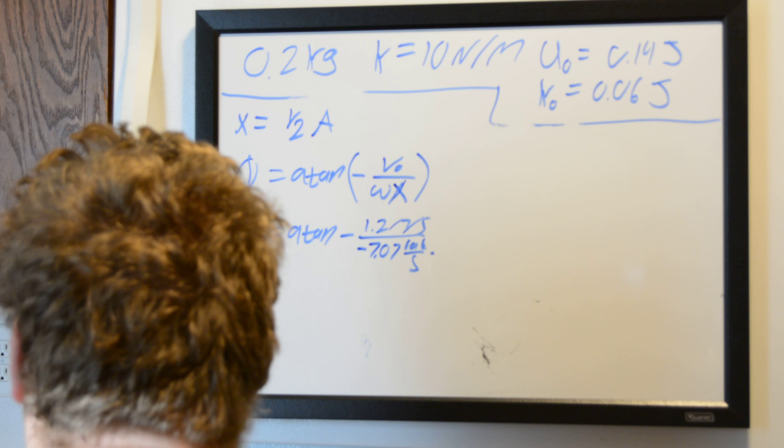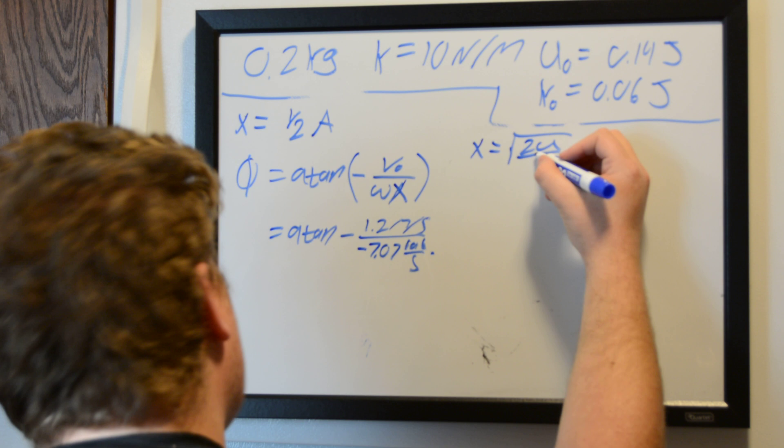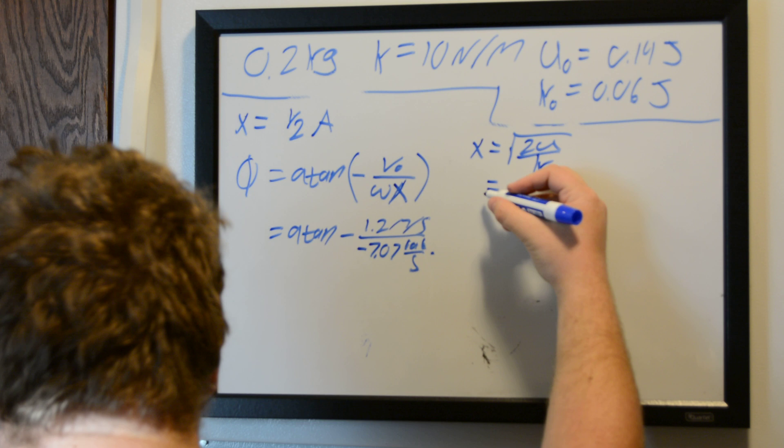And just solve that for x, which is what we did at the very start. So we have x is equal to square root over spring constant. And then we found this number earlier. That's our amplitude. So just 0.17 meters. 0.17 meters.